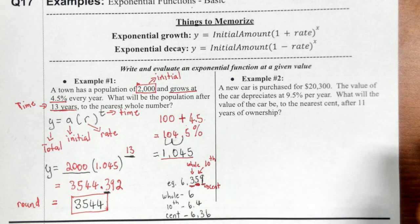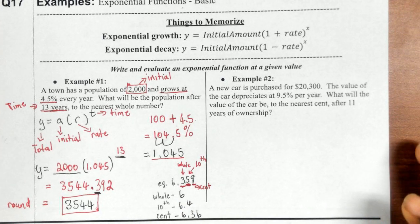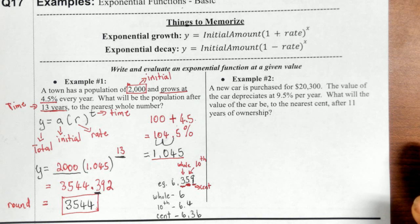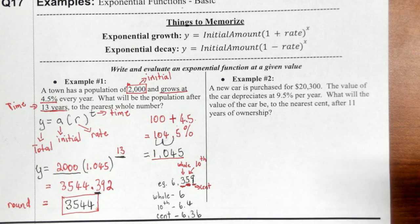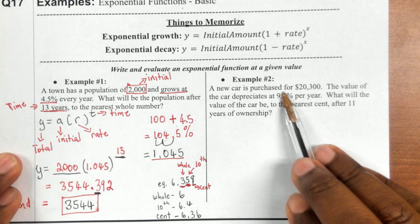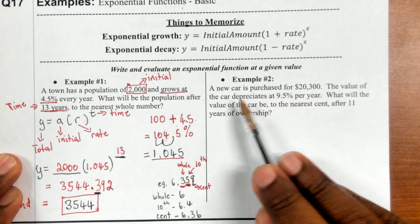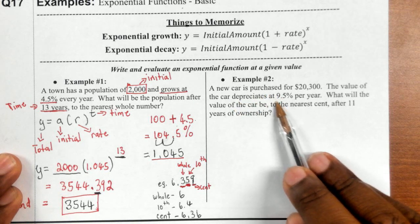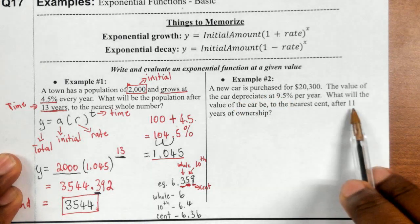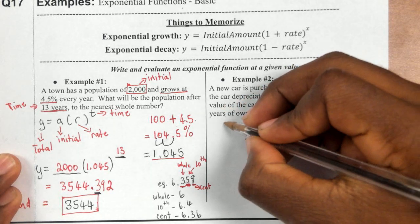Now the next problem. A new car is purchased for $20,300. The value of the car depreciates at 9.5% per year. What would the value of the car be to the nearest cent after 11 years of ownership? Whenever you see some amount that's depreciating or appreciating, growing or decaying, increasing or decreasing by some percentage over some period of time, you use the general form y = a(r)^t.